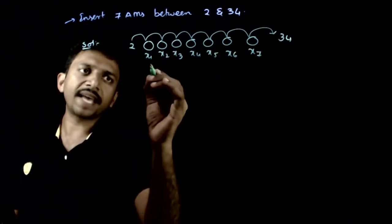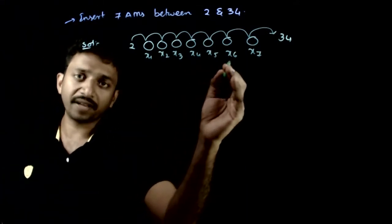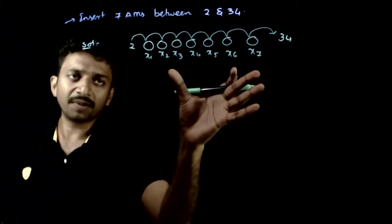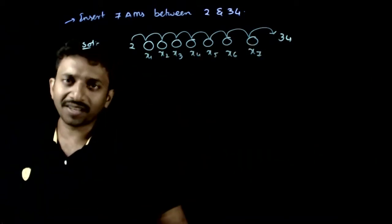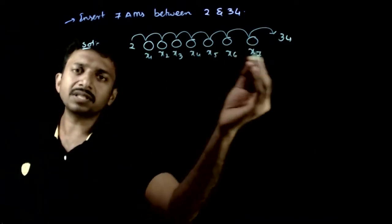So now if these x1, x2, x3, x4, x5, x6, x7 are the 7 arithmetic means inserted between 2 and 34, then this sequence forms an AP.